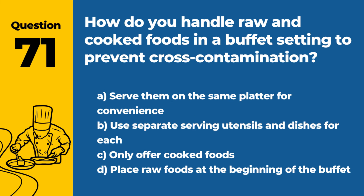Question 71. How do you handle raw and cooked foods in a buffet setting to prevent cross-contamination? a. Serve them on the same platter for convenience. b. Use separate serving utensils and dishes for each. c. Only offer cooked foods. d. Place raw foods at the beginning of the buffet. Answer b. Use separate serving utensils and dishes for each. In a buffet setting, it's crucial to use separate serving utensils and dishes for raw and cooked foods to prevent cross-contamination.